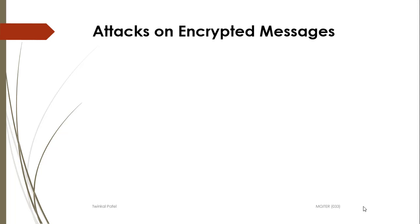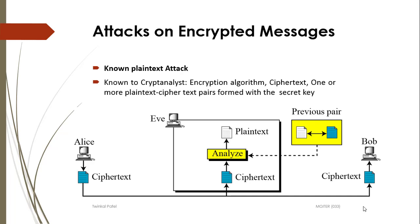In a known plaintext attack, the cryptanalyst knows the encryption algorithm, the ciphertext, and one or more plaintext-ciphertext pairs formed with the secret key. The attacker knows the plaintext that generates the ciphertext and can observe the plaintext-ciphertext pair. This attack has a significantly better chance of success than the ciphertext only attack, but simple encryption algorithms such as exclusive-OR cipher can be vulnerable to this type of attack.